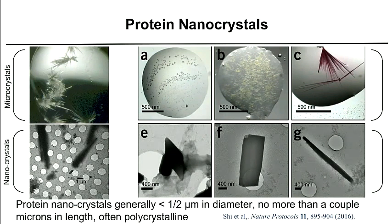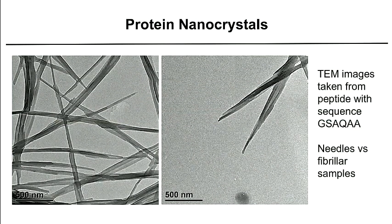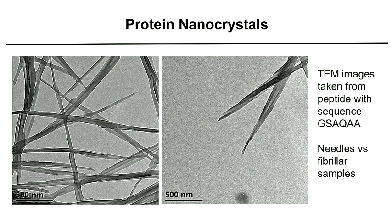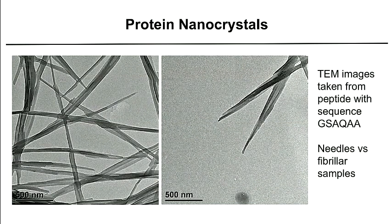The width of this needle is much smaller than the width of the hole. Protein nanocrystals are generally less than half a micron in diameter and no more than a couple microns in length. It's important to distinguish between needles and fibers. In these TEM images taken from a peptide with sequence GSAQAA, you can see fibrous material attached to a more crystalline rod. Needles are characterized by long crystalline lengths and very straight edges, whereas fibers can have bends and twists.